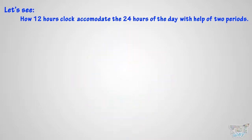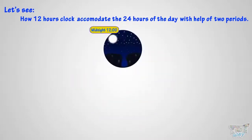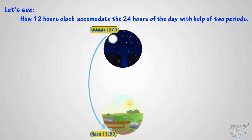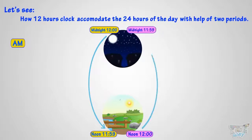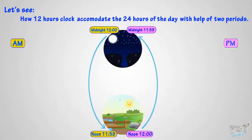Let's repeat. The time from midnight 12 to noon 11:59 is called a.m. time. The time from noon 12 to midnight 11:59 is called p.m. time. Here are a few events to make it clear what time is a.m. and what time is p.m.